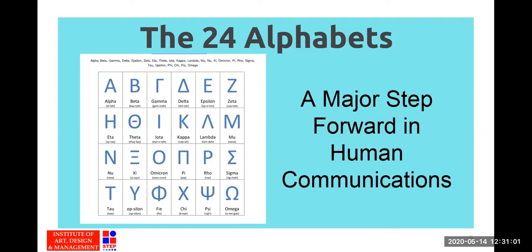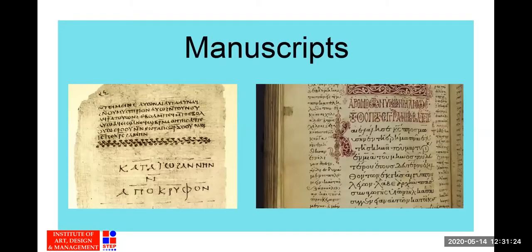This allowed all people — common people and others alike — to utilize and participate in communication. Greek civilization had 24 alphabets, while our English has 26 alphabets. Greek manuscripts show the birth of typography. Typo is the arrangement of type in a page layout, referred to as typographic composition.